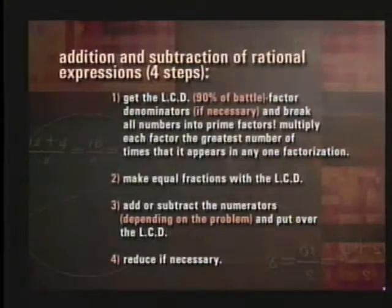So to get that crucial LCD, factor the denominators if necessary and break all numbers into prime factors. Multiply each number the greatest number of times it appears in any one factorization. Step two, make equal fractions with that common denominator. Three, add or subtract depending on the problem and put it over the common denominator. Step four, always look to reduce. If you missed these in the last episode, make sure you get these notes down. We will go to the last example here.